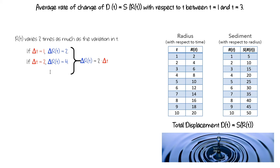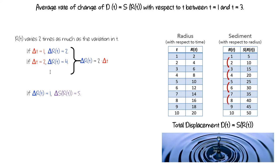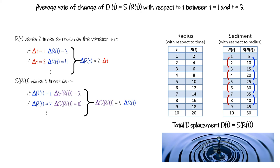Now let's think about the other table. When the radius at time t goes up by one inch, the displaced sediment goes up by five cubic inches. So if delta r of t equals one, delta s of r of t equals five. Similarly, when the radius goes up by two inches, the volume of sediment goes up by 10 cubic inches, so if delta r of t is two, delta s of r of t equals 10. We could continue doing this and would see that delta s of r is always five times as large as delta r, which we can describe as s of r of t varies five times as much as the variation in r of t.